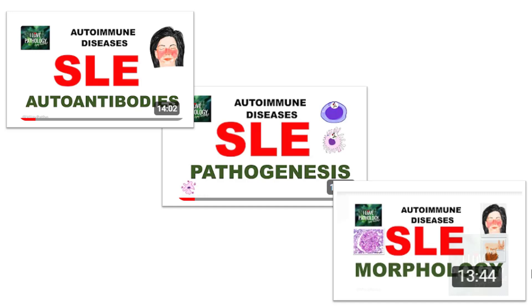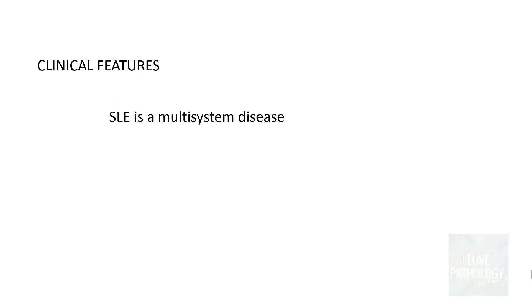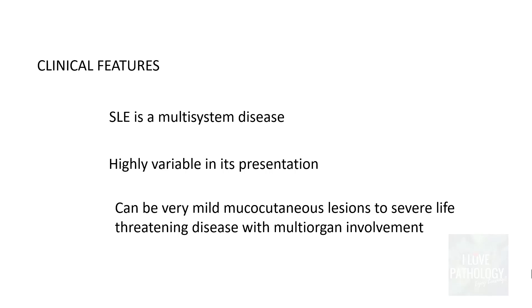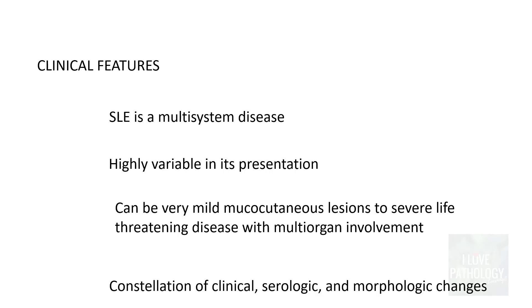If you are here for the first time, I would suggest you to watch the previous videos on SLE where I have talked about the autoantibodies, etiopathogenesis, and morphology of systemic lupus erythematosus. Remember, SLE is a multi-system disease and is very variable in its presentation — it can range from minimal mucocutaneous lesions to severe life-threatening disease with multi-organ involvement. Based on clinical features alone, you cannot make a diagnosis of SLE; it is a constellation of clinical, serologic, and morphological changes.